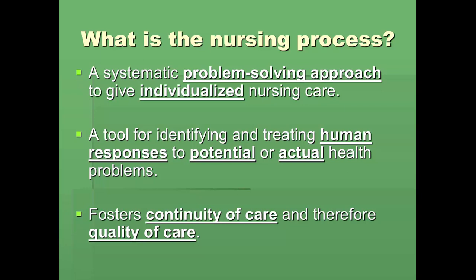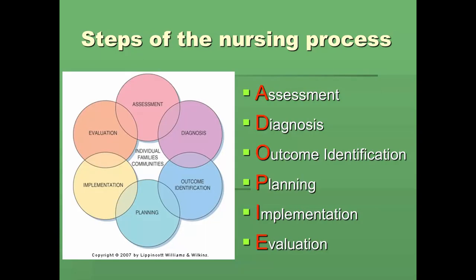Let's take a look at the different steps or phases of the nursing process. Here we have in picture format on the left-hand side of the screen, and in list format on the right, you will see starting with assessment, then moving to diagnosis, outcome identification, planning, implementation, and evaluation. The first letters are highlighted in red and you will often hear the acronym ADPIE to describe the steps of the nursing process.